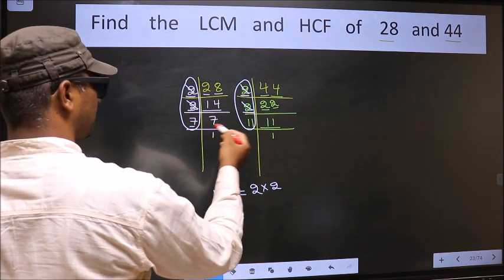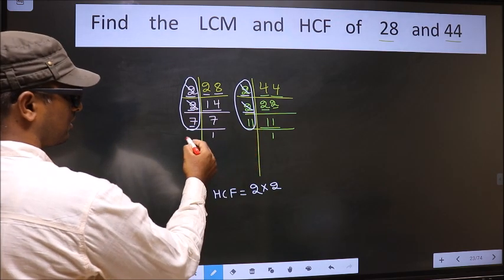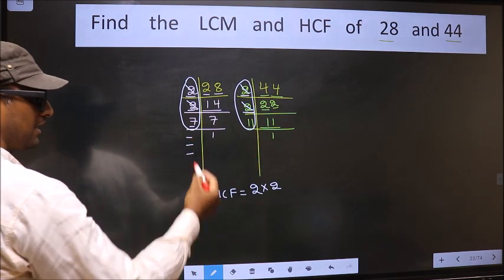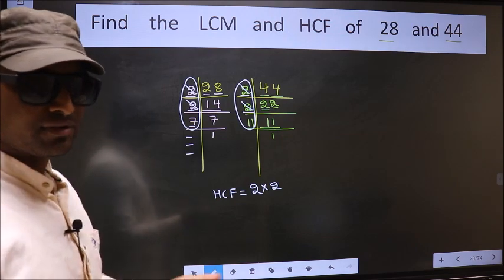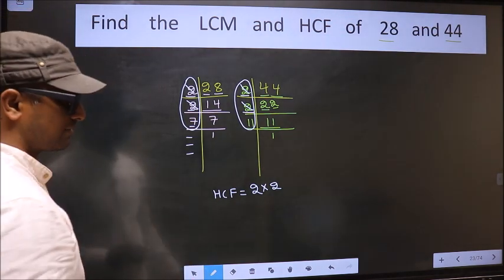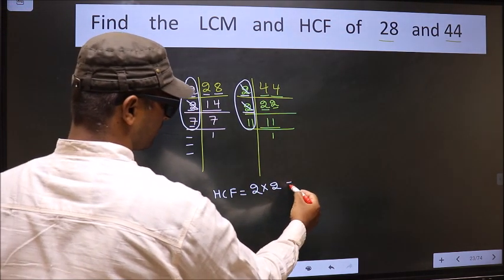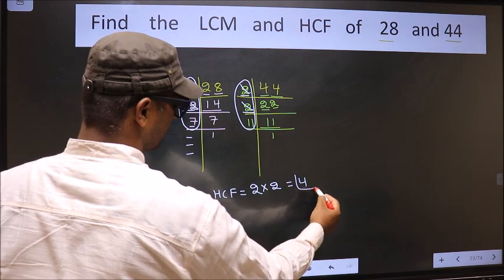Next number 7. Do we have 7 here? No. No more numbers have been left. Therefore our HCF is 2 times 2, which is 4. So 4 is our HCF.